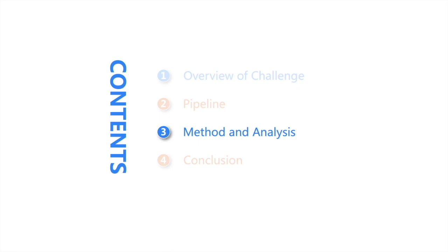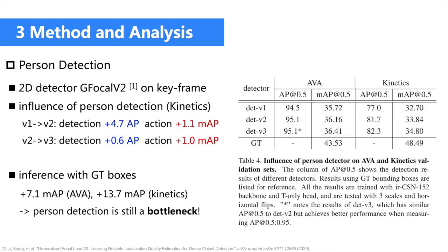For person detection, we use GFocal V2 as a 2D detector and develop three versions of trained detectors. With increasing quality of detection results, the final action detection results obtain significant improvement — each version introduces about 1 MAP gain. We also apply ground truth bounding boxes, and the final results achieve improvements of 7 and 13 MAP for AVA and Kinetics respectively, showing that person detection is still a bottleneck for this challenge.